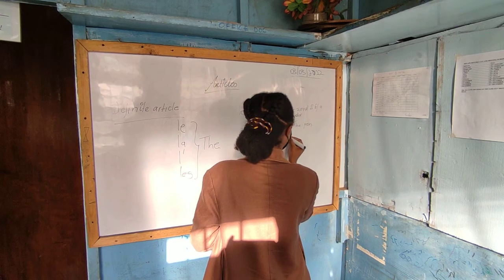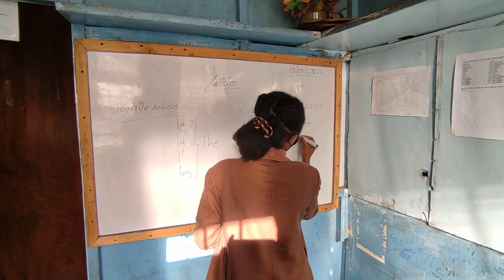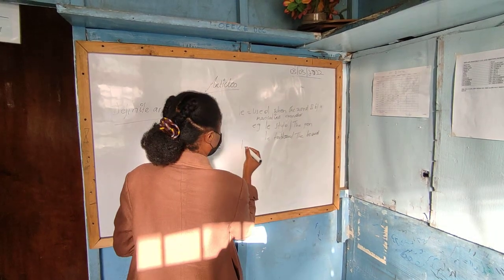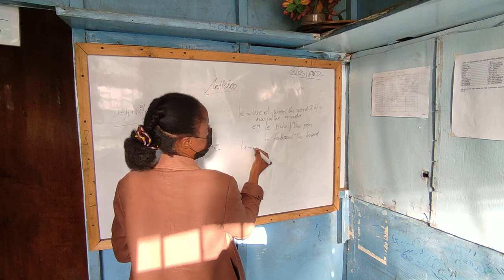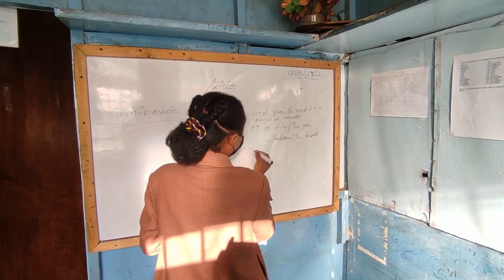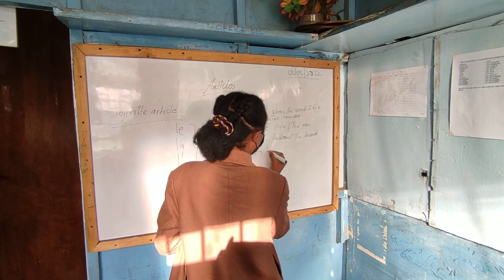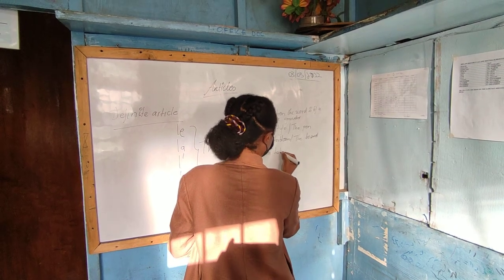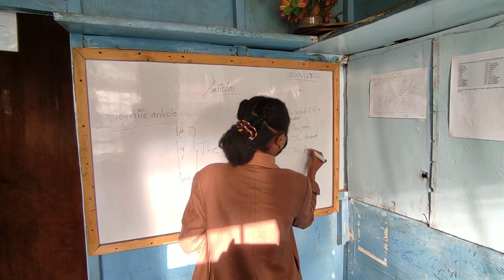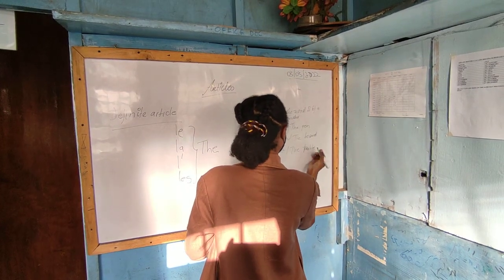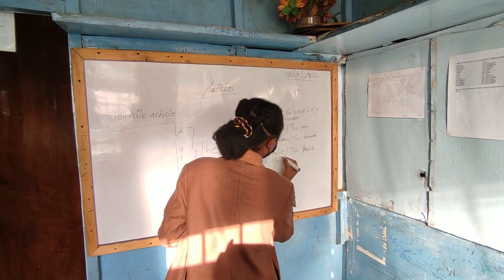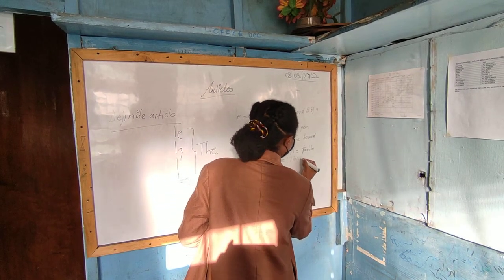La is used when the word is of a feminine gender, and we have some examples. La table, which means 'the table.' The other example is la chaise, which means 'the chair.'